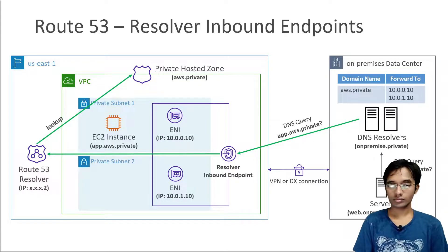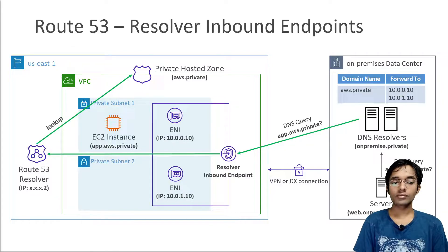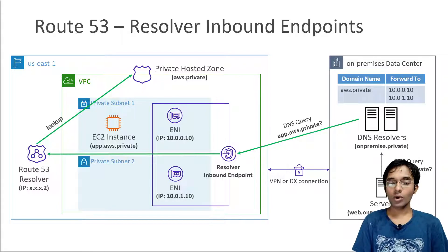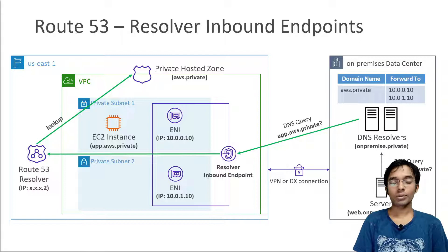In this diagram we have an EC2 instance with a DNS name of app.aws.private living in a VPC, and we have a private hosted zone for the domain aws.private. We also have an on-premise data center with a DNS server and a server named web.onpremise.private. The EC2 instance has a CNAME or an A record pointing to app.aws.private, linking to the private IP of the EC2 instance.